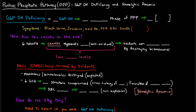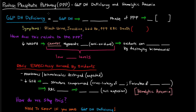In this video, I want to finish up our talk of the pentose phosphate pathway by talking about a disease that relates to it — specifically glucose 6-phosphate dehydrogenase deficiency and hemolytic anemia and how they play a role here.